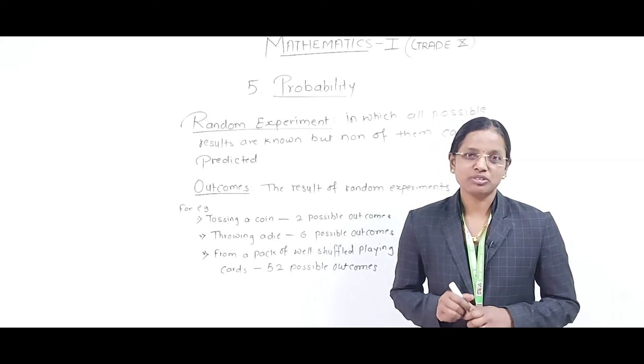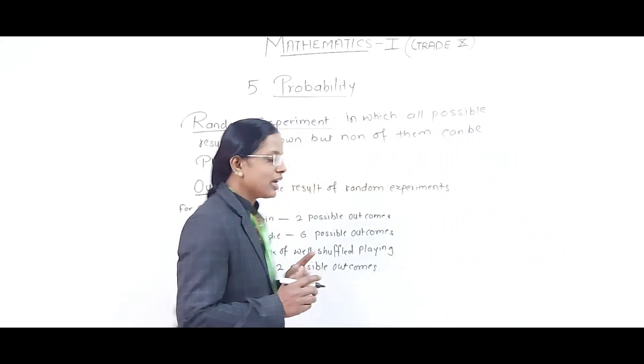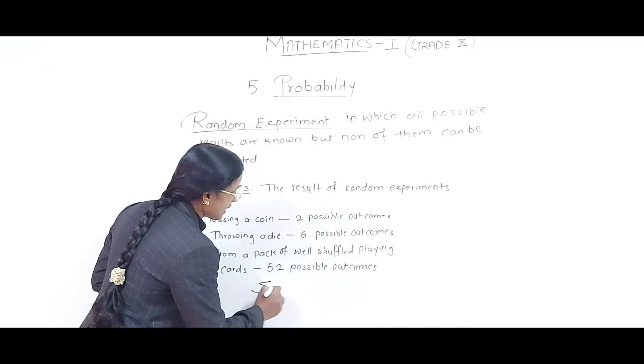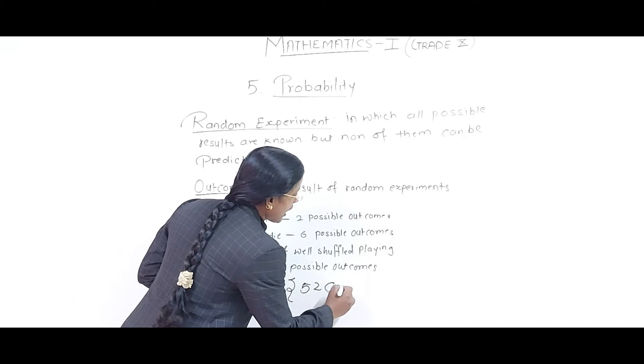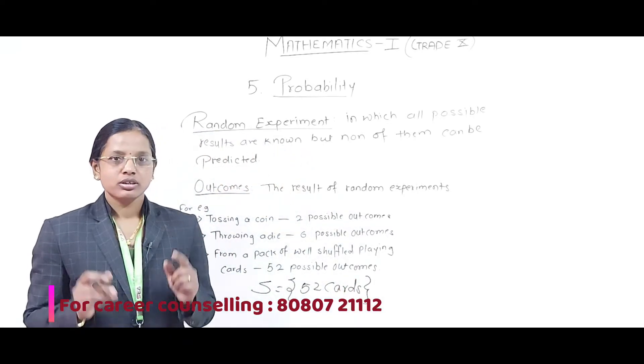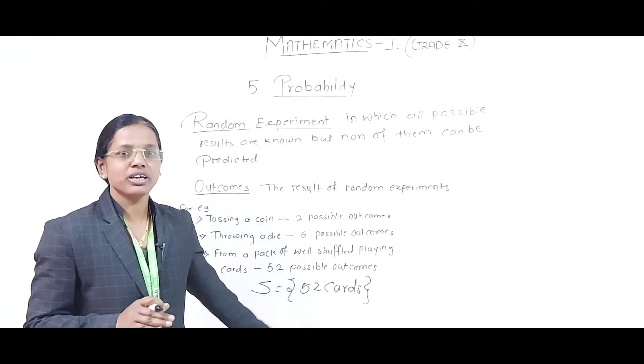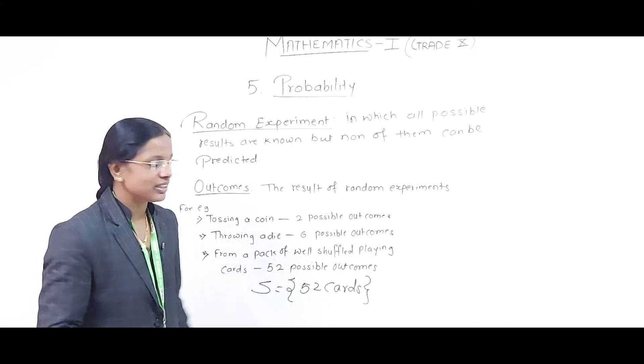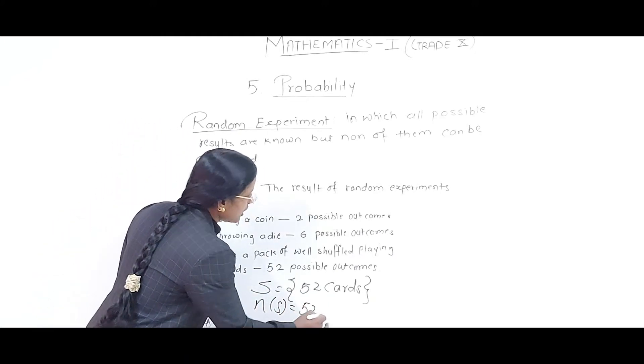These possible outcomes we write as sample space. That is, S = {52 cards}. It is enclosed in curly brackets because the data enclosed in curly brackets is limited. The number of sample points will be 52 in this case.